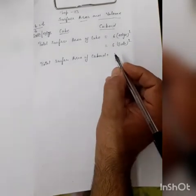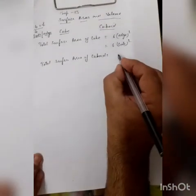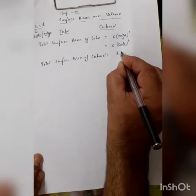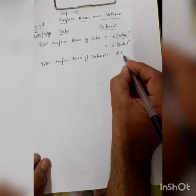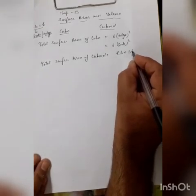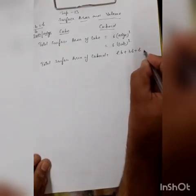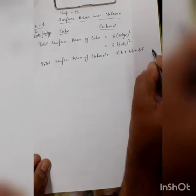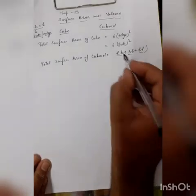For a cuboid, it also has six faces but they are not all equal. The top and bottom are equal to each other, each side face is equal to its opposite, and the remaining two opposite faces are also equal. So you find the area of all six faces: length × breadth for top or bottom, breadth × height for one pair of walls, and height × length for the other pair.